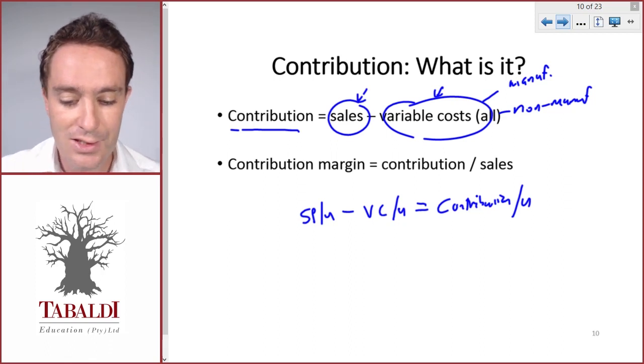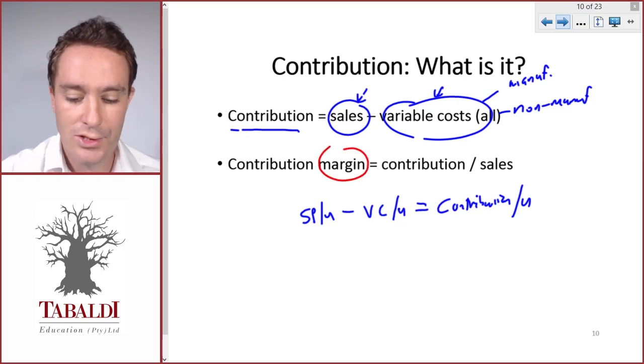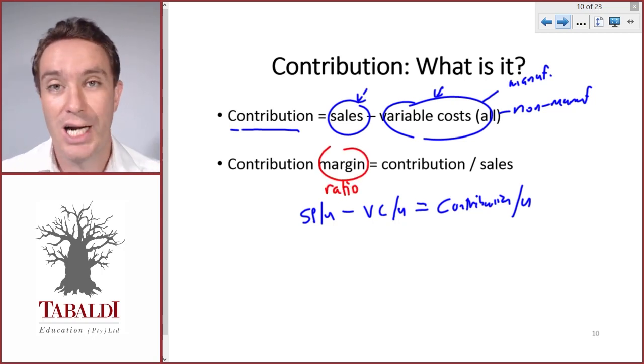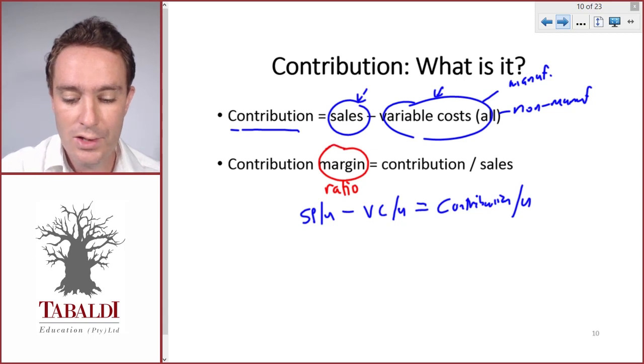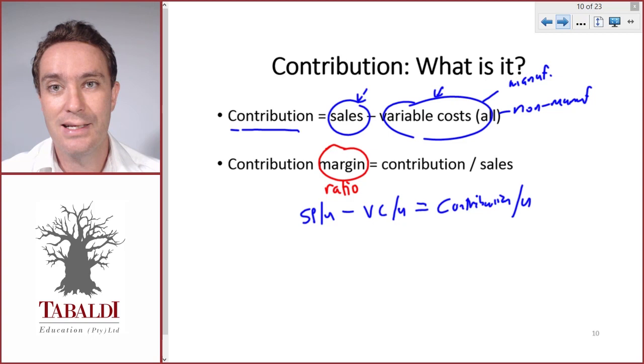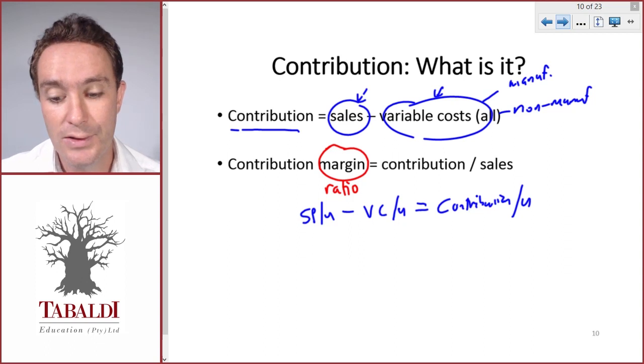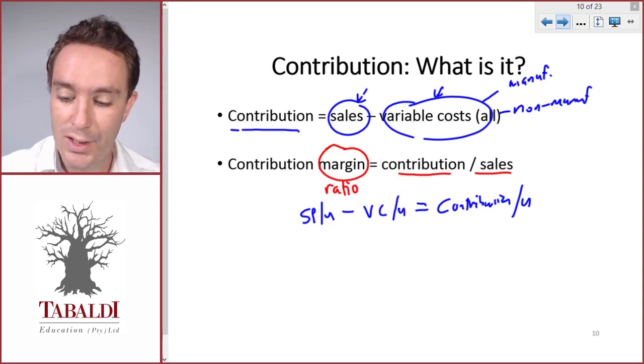Contribution margin is also sometimes referred to as contribution ratio. The word margin usually refers to something divided by sales, or a percentage of sales value. Contribution margin would be total contribution divided by total sales, giving you a percentage of sales.